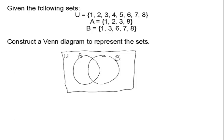I'm going to go through every element of the universe. The first element is 1 and I notice that 1 is in both set A and set B. So that means 1 is in the intersection, so I'm going to draw number 1 right there. The next element is 2. 2 is only in set A, so I'm going to put 2 right here.